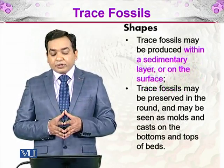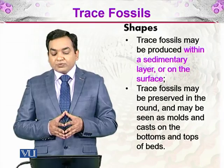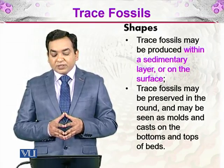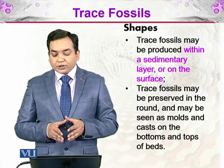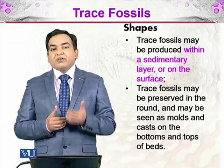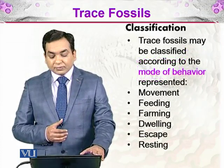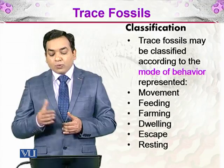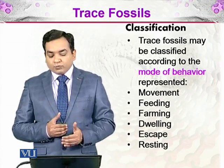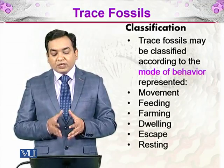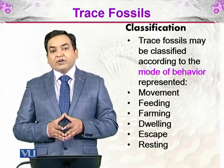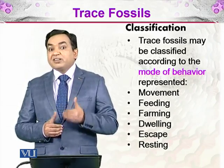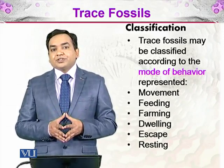Trace fossils may be produced within a sedimentary layer or on the surface, and may be preserved in the round or seen as molds and casts on the bottom and top of a bed, giving them different forms and shapes. Trace fossils may also be classified according to the mode of behavior they represent — for example, movement, feeding, farming, dwelling, escape, and resting. All of these behaviors can translate into trace fossils if the conditions are right.